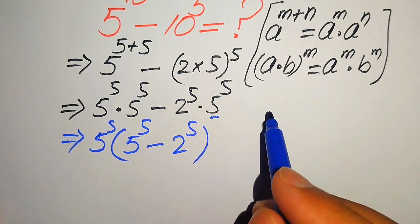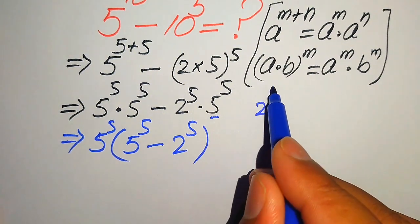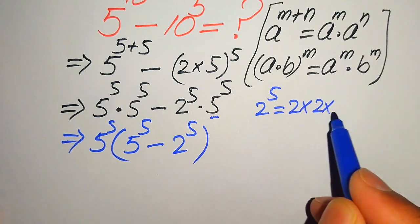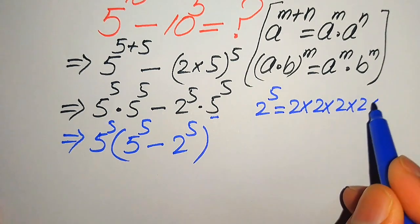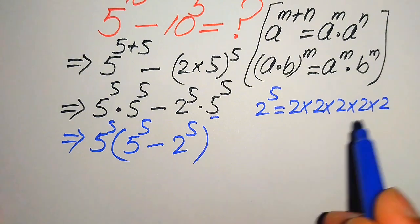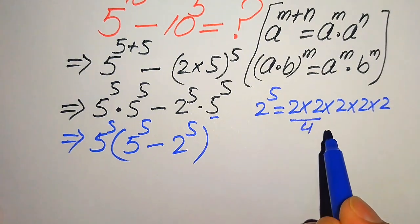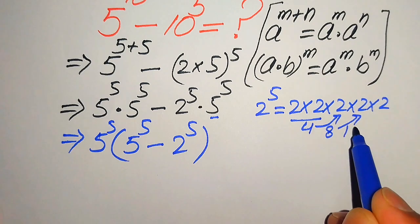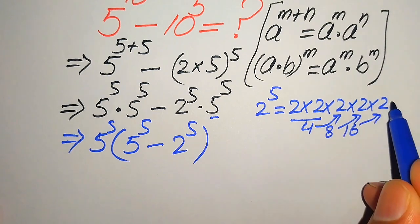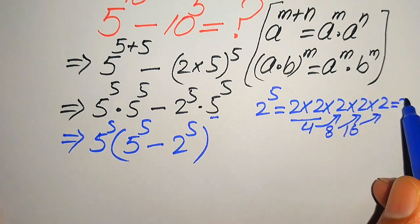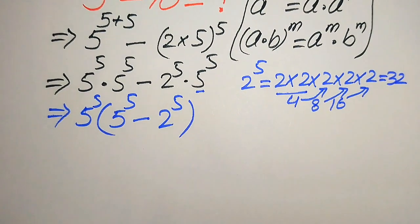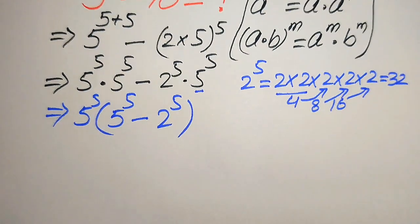In the next step we find the values of 5 to the power of 5 and 2 to the power of 5. We first find 2 to the power of 5, which means multiplying 2 by itself 5 times: 2×2=4, 4×2=8, 8×2=16, 16×2=32. So 2 to the power of 5 equals 32.